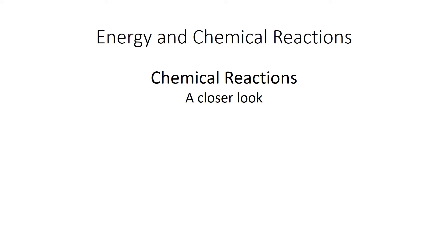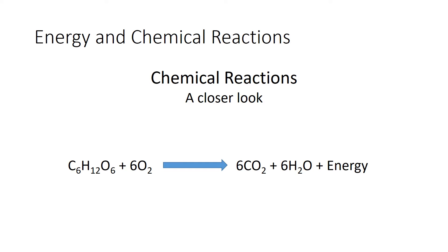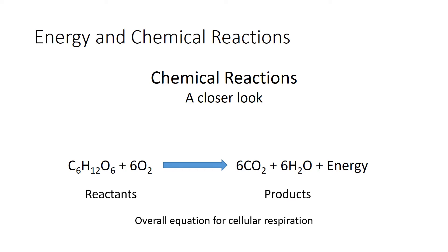Here's an example of a very important chemical reaction. Take some glucose, react that with oxygen, and you get carbon dioxide, water, and this reaction releases energy. You may have recognized this chemical equation — it's the overall equation for cellular respiration, incredibly important because this is how we extract energy from our environment. On the left side we have the reactants, glucose and oxygen. On the right side we have the products, carbon dioxide and water, and it also releases energy.